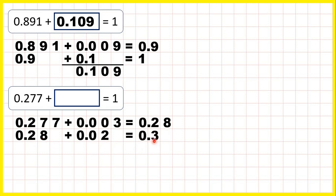We don't need zeros on the end of decimals, but now, from 0.3, we can add 0.7 to make one whole.